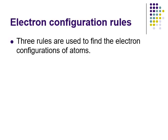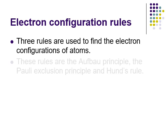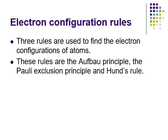To find the electron configuration, we use three rules simultaneously: the Aufbau principle, the Pauli exclusion principle, and Hund's rule. I'll introduce them one by one, but they work together.